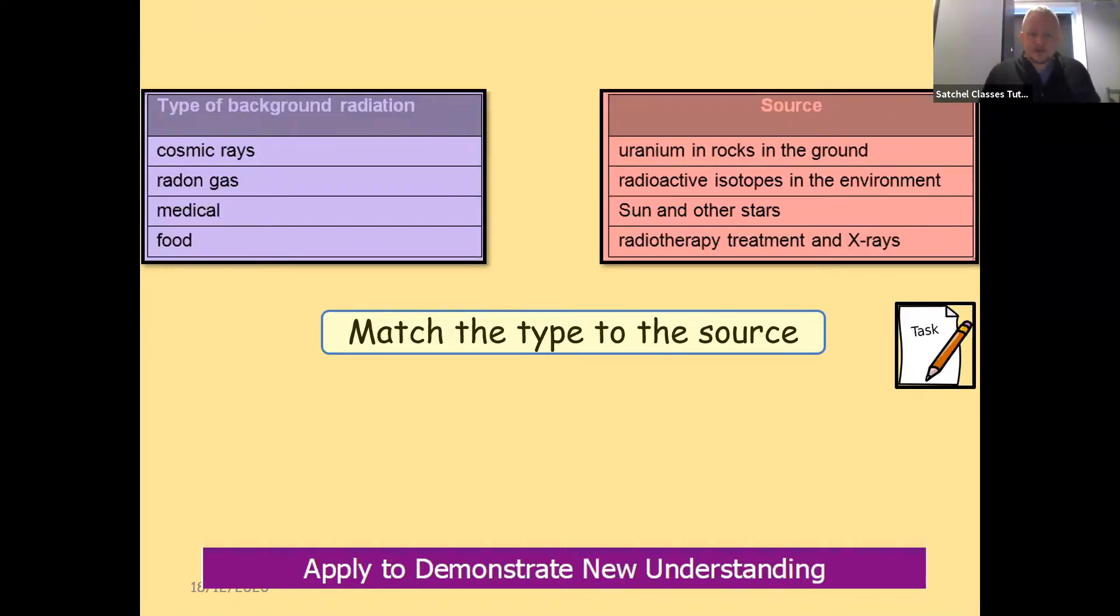Quick question here: match the type to the source. So they give you a type of background radiation and a source, and this is usually something that's worth one, maybe two marks in a paper.